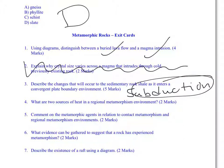Comment on the metamorphic agents in relation to contact metamorphism and regional metamorphism. Well, I want you to understand that you need all three in both environments. So for contact metamorphism, you're going to need heat, pressure, and hot chemical fluids.